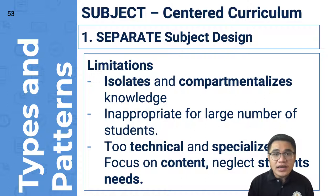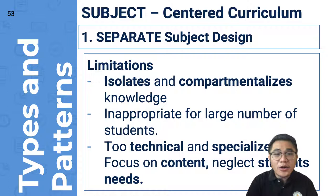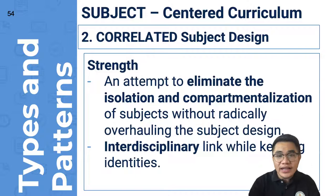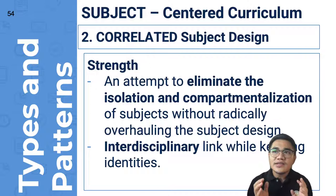Going back, separate subject design can be observed in a traditional view of education. There are subjects that can be correlated, which brings us to the correlated subject design. Its strength is that it attempts to eliminate the isolation and compartmentalization of subjects without radically overhauling the subject design. It creates interdisciplinary links while keeping subject identities. Correlated design involves two subjects that can be related — for example, literature and history.